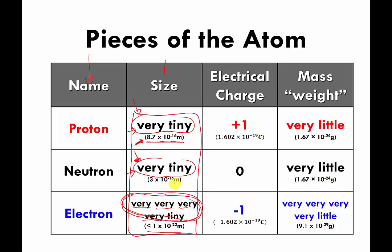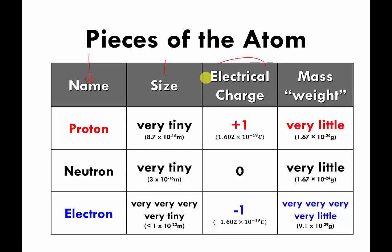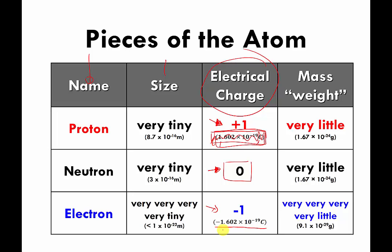The next column is electrical charge. The proton has an electrical charge of 1.602 times 10 to the negative 19 coulombs — you don't need to know what a coulomb is or this number. As far as we are concerned, the proton has an electrical charge of plus one. The neutron has no electrical charge, so it's written as having a charge of zero. The electron has an electrical charge of negative 1.602 times 10 to the negative 19 coulombs, which is the opposite of the proton's charge. So: proton has a charge of plus one, electron has a charge of negative one.